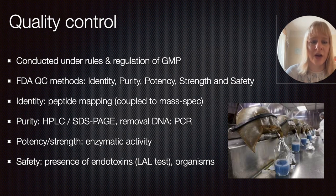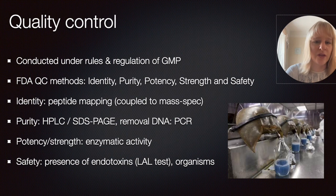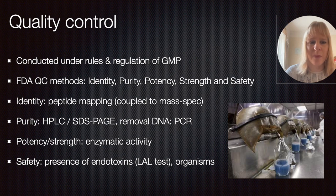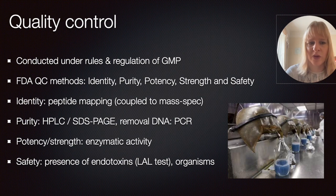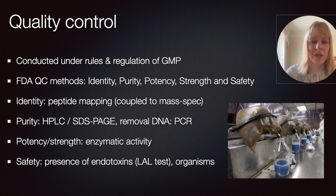The quality control matters recognized by the FDA mainly look at identity, purity, potency — which is linked to strength — and the safety of your product. For an enzyme, identity can be done with peptide mapping, usually done with mass spectrometry, to confirm the correct enzyme was made. For purity, techniques like HPLC or SDS-PAGE are very important, and to ensure DNA is fully removed, PCR is needed. For potency and strength, enzymatic assays are used to check whether the enzyme structure was impacted by the processes it went through.